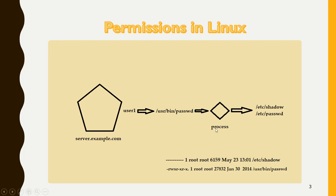Now we need to understand: who initiated this process? User1 initiated it, because user1 executed the file. Anything we do on the system — even firing ls — initiates a process at the backend. Since user1 initiated this process, the process will start with user1's rights only. When this process approaches the /etc/shadow file, it has only user1's permissions, so it won't be able to update that file. The process doesn't have enough rights to change /etc/shadow.